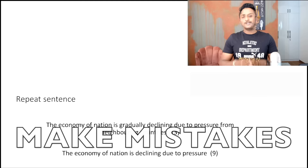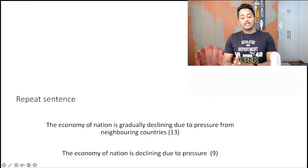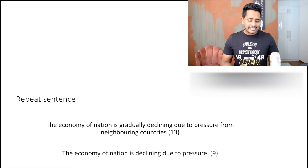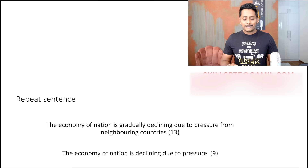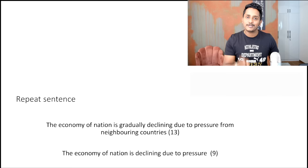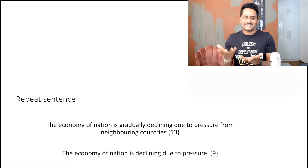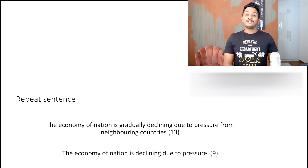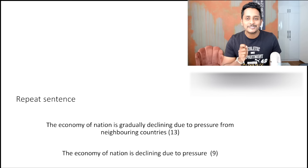Let's take this audio: 'The economy of the nation is gradually declining due to pressure from neighboring countries.' There are 13 words. A typical random person would try to speak all 13 words: 'Economy of nation is declining due to pressure from neighboring countries' — ends up getting zero. But that person thinks the exam went absolutely fine and expects 90, then sees the score report showing 55-60. On the other hand, if you speak 'The economy of nation is declining due to pressure' fluently — trust me, you get full marks.